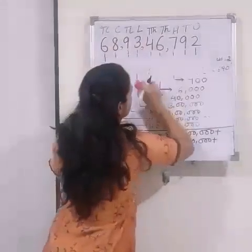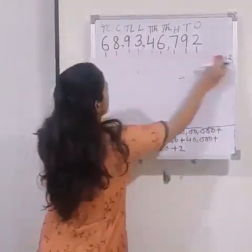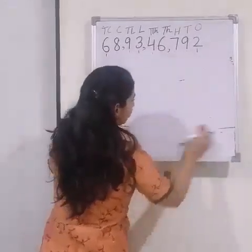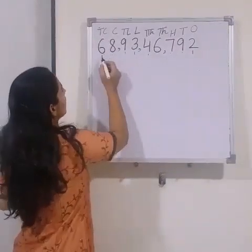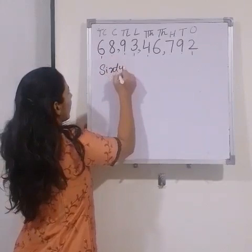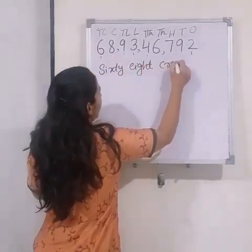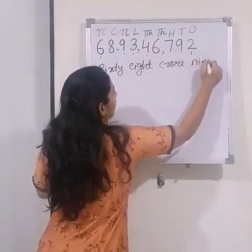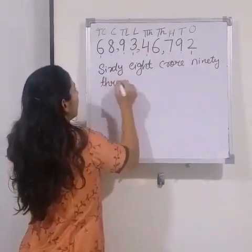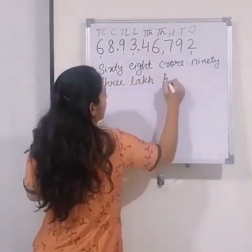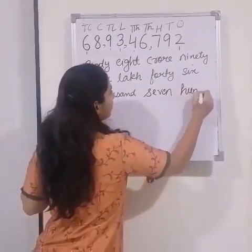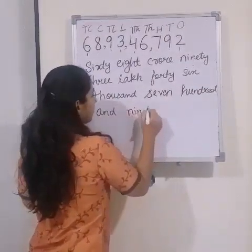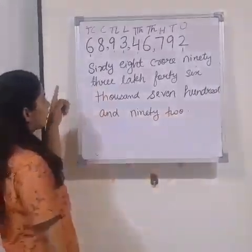Now we will see how to write this number in word form. First, write the number in the place value chart, then write it out. So the number name is: sixty-eight crore ninety-three lakh forty-six thousand seven hundred and ninety-two.